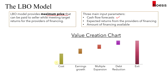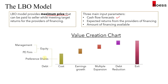The initial investment can be funded from different sources. Equity will form a small percentage of the investment, normally coming from management and the PE firm — management will usually hold a small percentage of the equity while the PE firm holds most of it. Besides common equity, there are also preference shares and debt. For debt, there is senior debt, high yield debt, and also mezzanine.